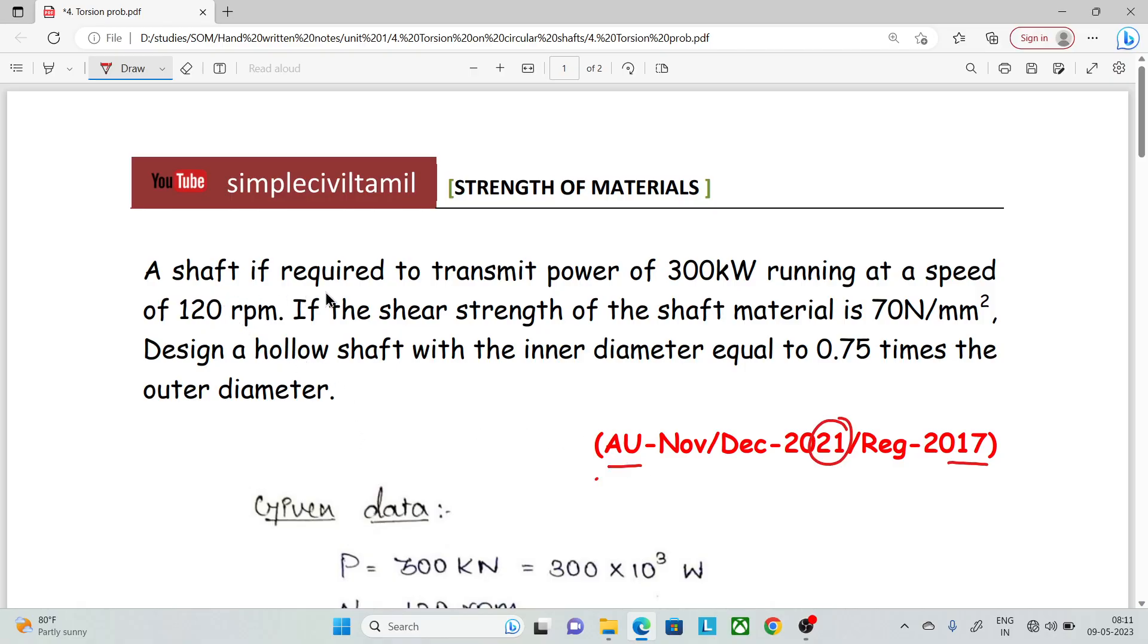This shaft is required to transmit power of 300 kilowatt (P = 300 kW) running at a speed of 120 revolutions per minute (N = 120 rpm).